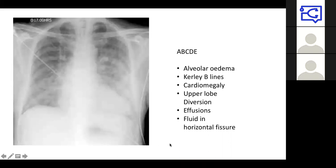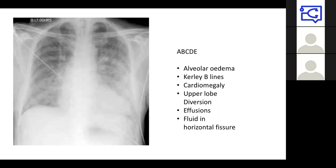On the chest X-ray in heart failure, you can see alveolar oedema — an ABCDE mnemonic — with interstitial shadowing. Curly B lines indicate fluid in the small fissures. Cardiomegaly — cardiothoracic ratio greater than 0.5 — and upper lobe blood diversion are key signs. You can see pleural effusions with blunting of the costophrenic angles, and fluid in the horizontal fissure, usually on the right. We'll discuss this in more detail in the radiology session.